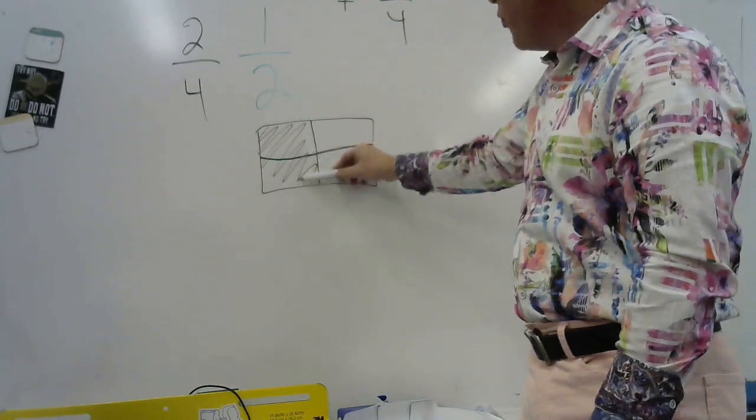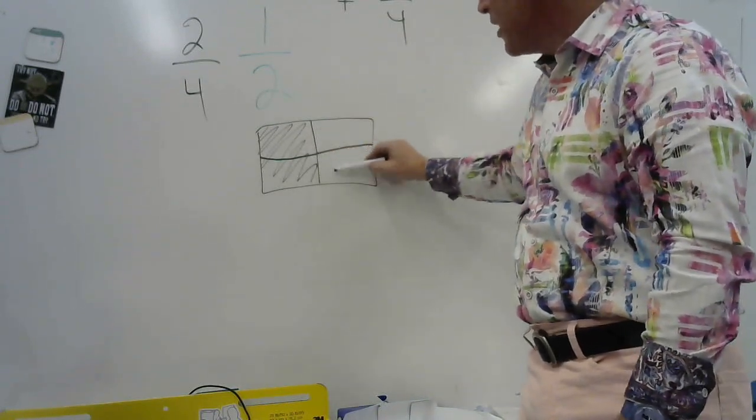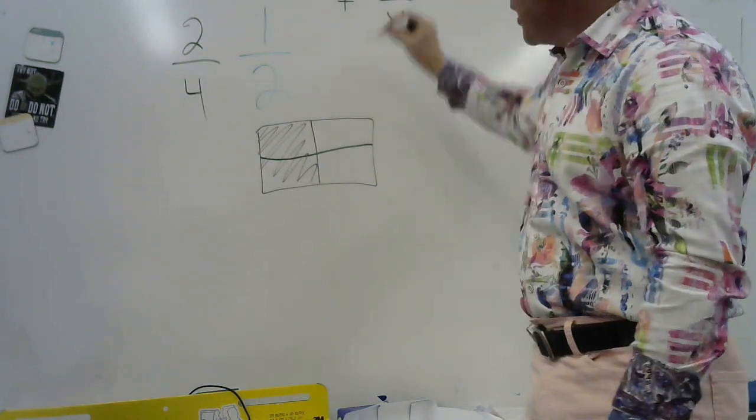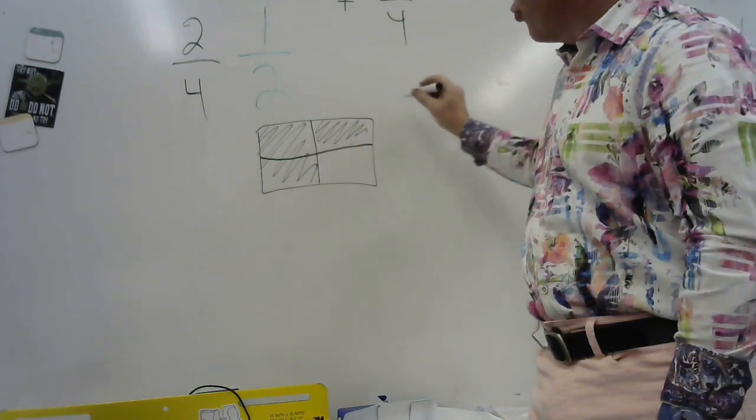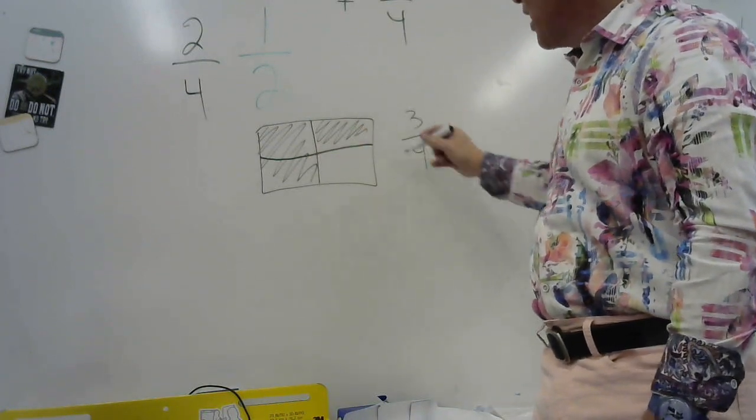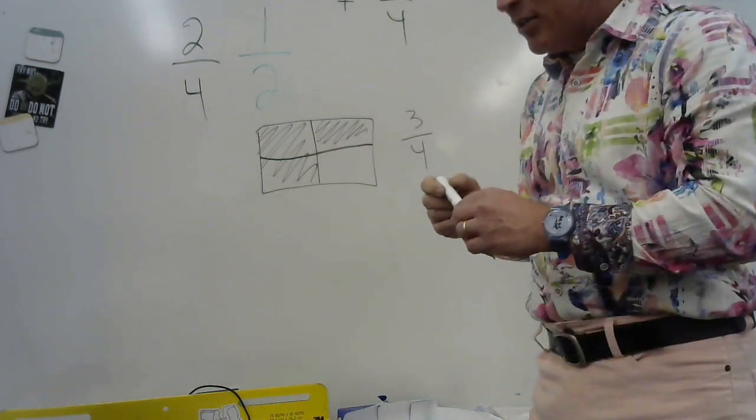And now that they are congruent pieces, or they're the same size, now she can add the one. And that's what she did, and that's how she got, as an answer, three fourths. Because she was able to add because all the sizes were congruent.